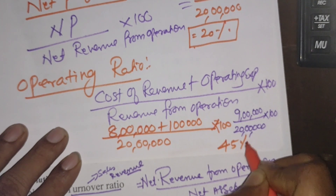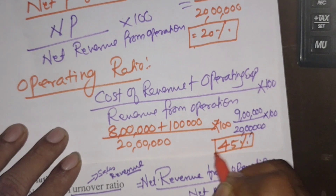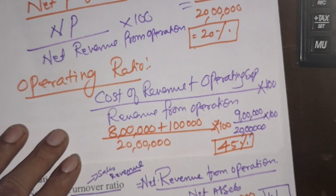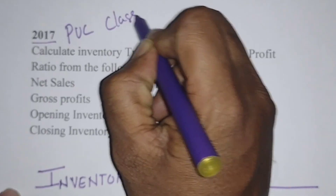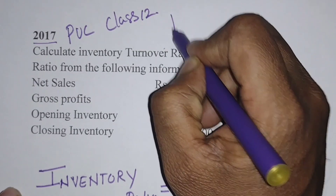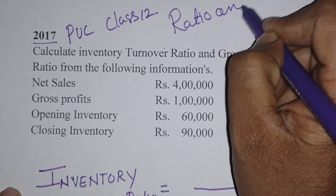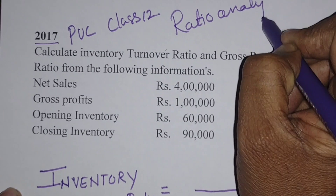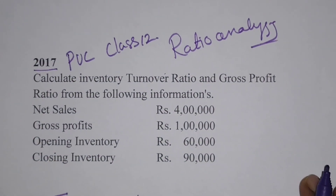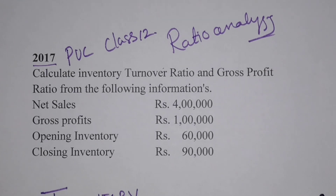45% is the answer. That's it about this problem on chapter ratio analysis. It is a very simple problem.